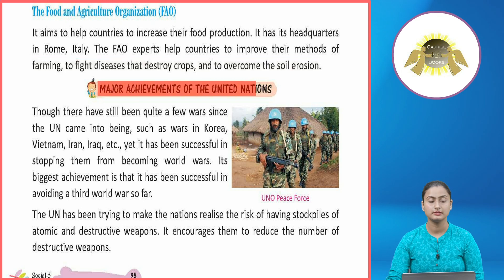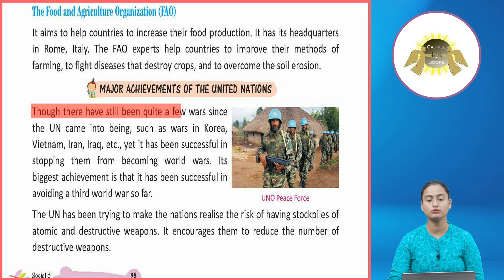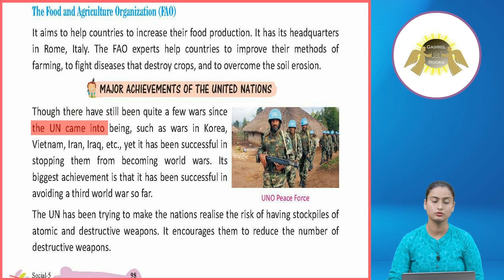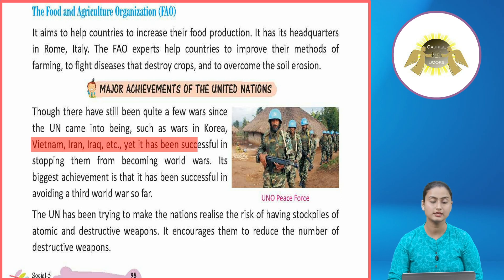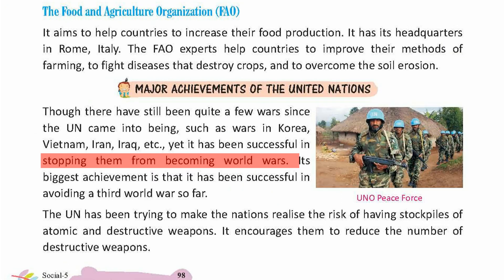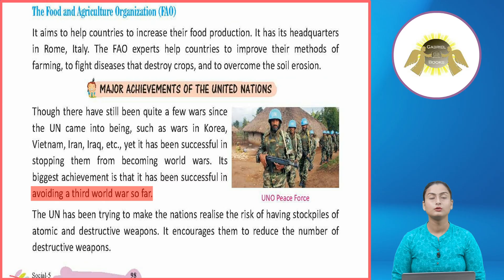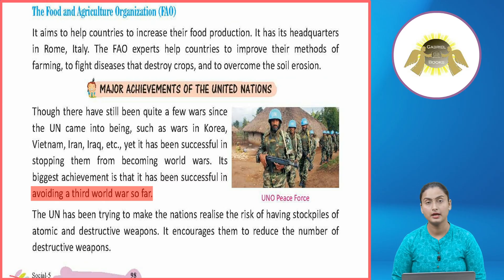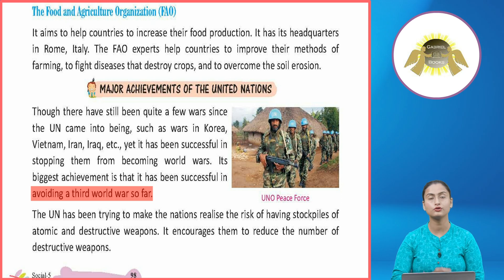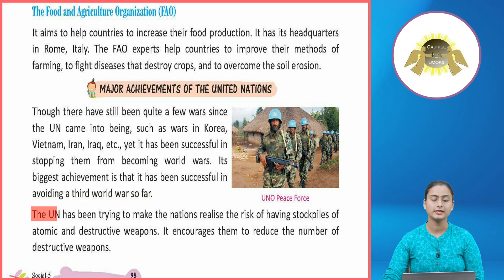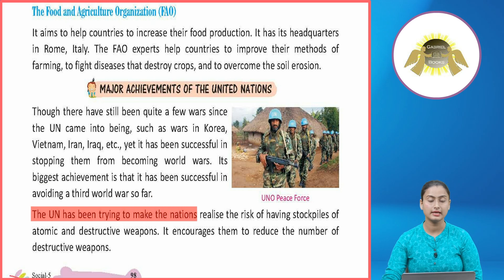Major achievements of the United Nations: though there have been quite a few wars since the UN came into being — such as wars in Korea, Vietnam, Iran, Iraq — yet it has been successful in stopping them from becoming a world war. Its biggest achievement is that it has been successful in avoiding a Third World War so far. UN ke establishment ke baad kaafi saari ladaiyaan alag-alag jagahon par hui hain, lekin UN ka sabse bada achievement yeh hai ki in saari wars ko World War 3 mein convert hone se UN ne roka hai.